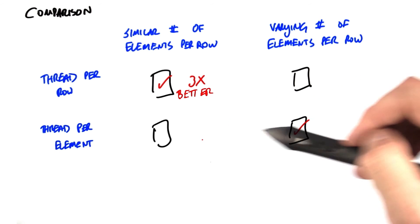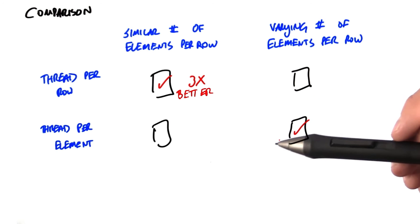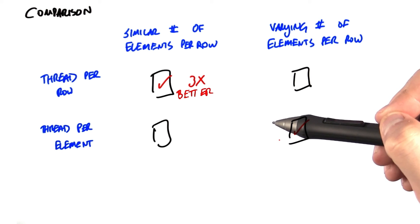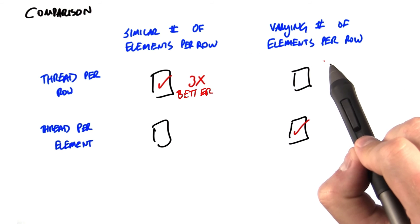So because we have different performance characteristics here, it's kind of a head-scratcher problem. Which data structure do we choose, given that we probably don't know what the structure of the matrix is before we need to make this call?